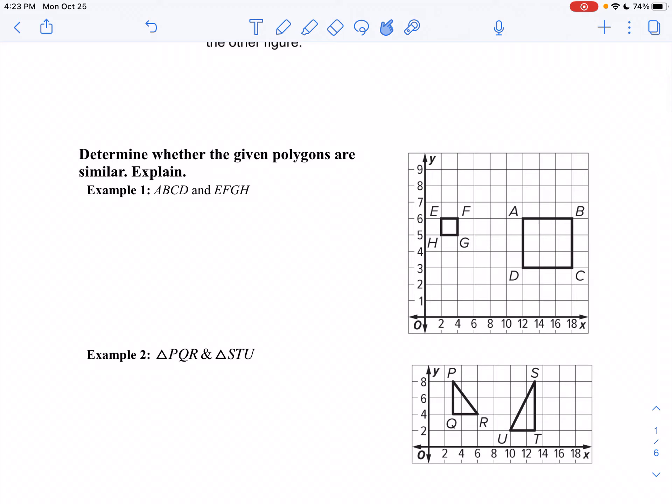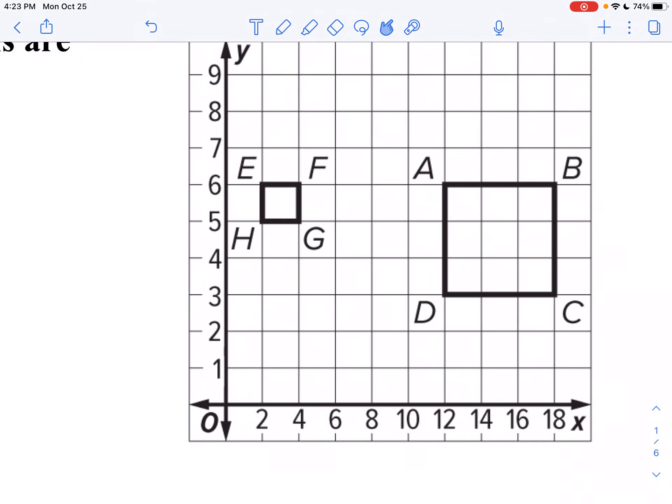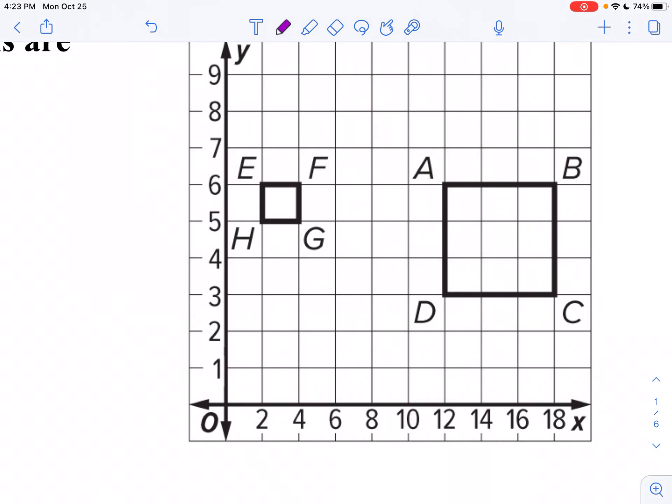If we take a look at our first diagram here, I want to know, are these two polygons similar? Now, please note that we have different scales for x and y axis. We're going two across for my x coordinates, but it's only one up and down for my y coordinates, so this is two by one.